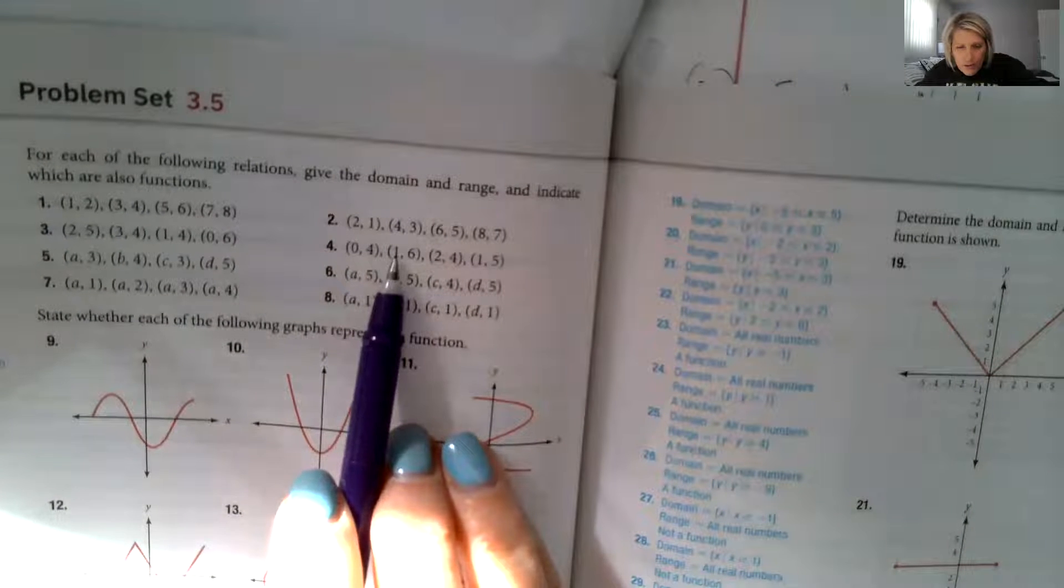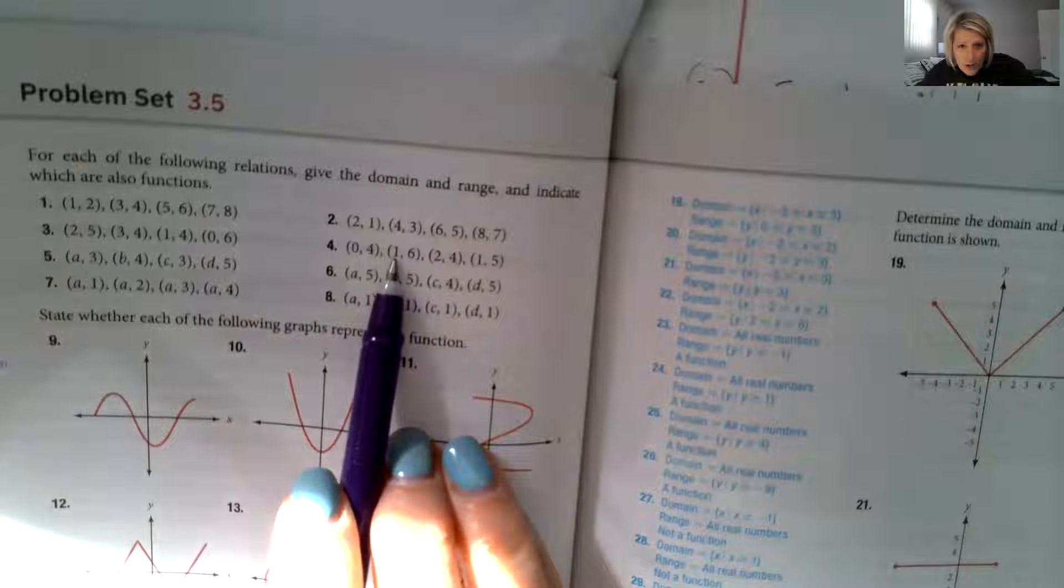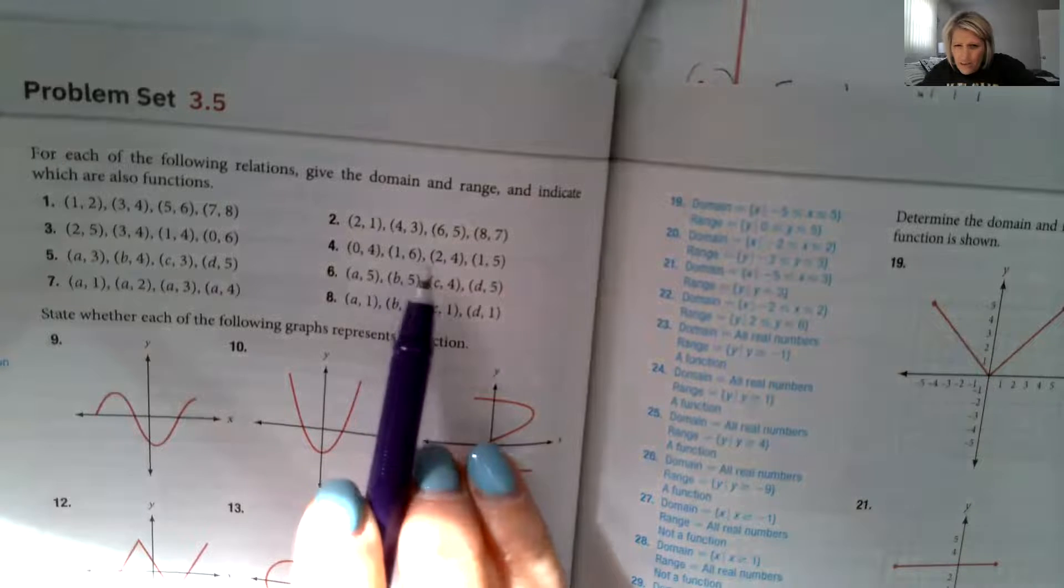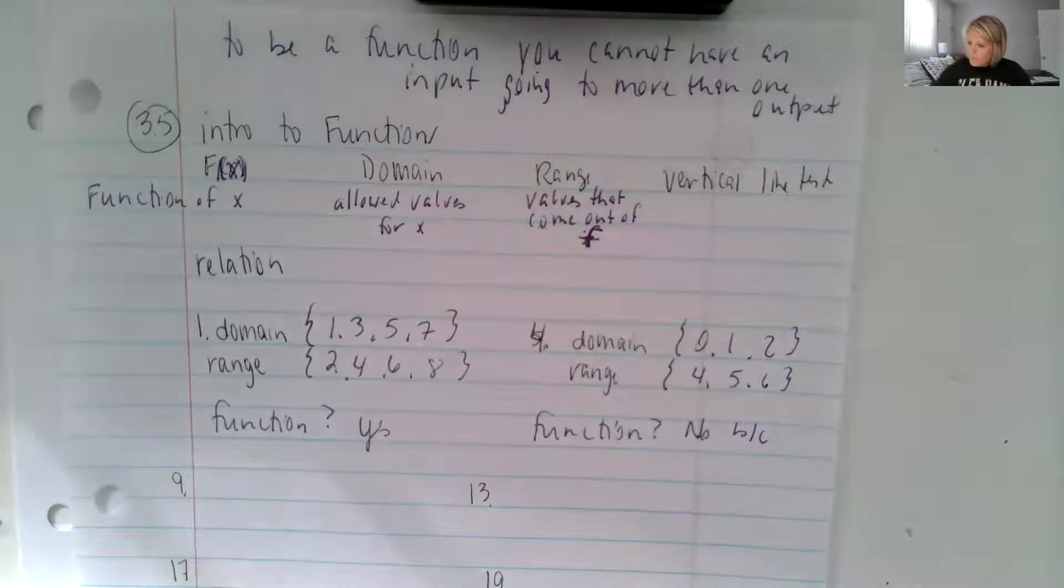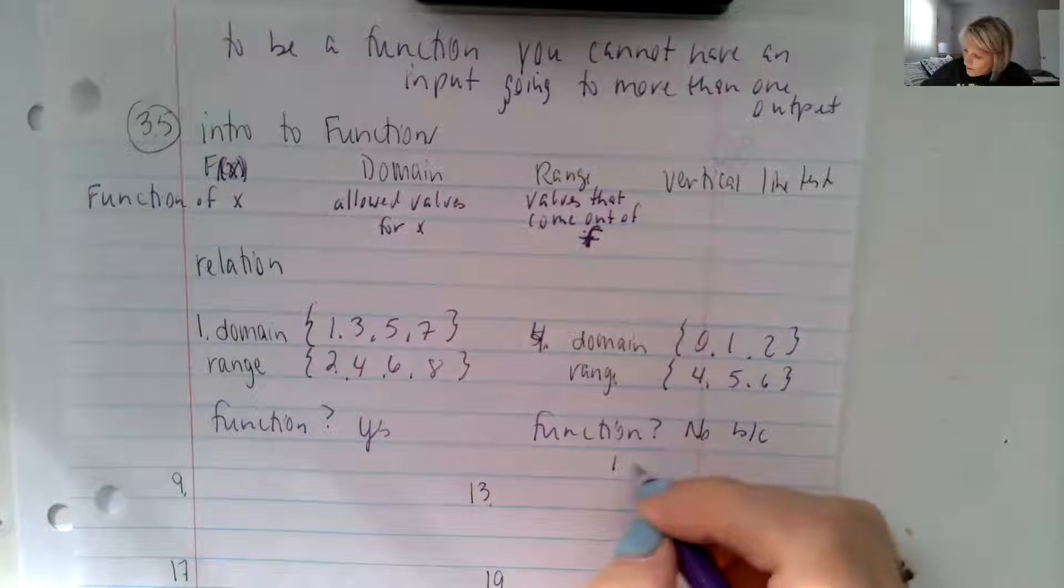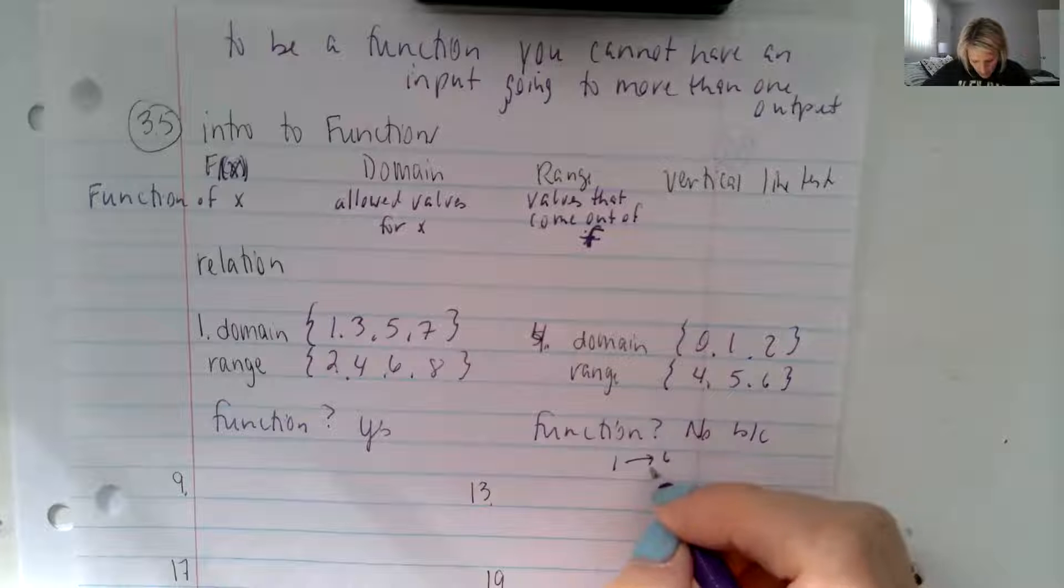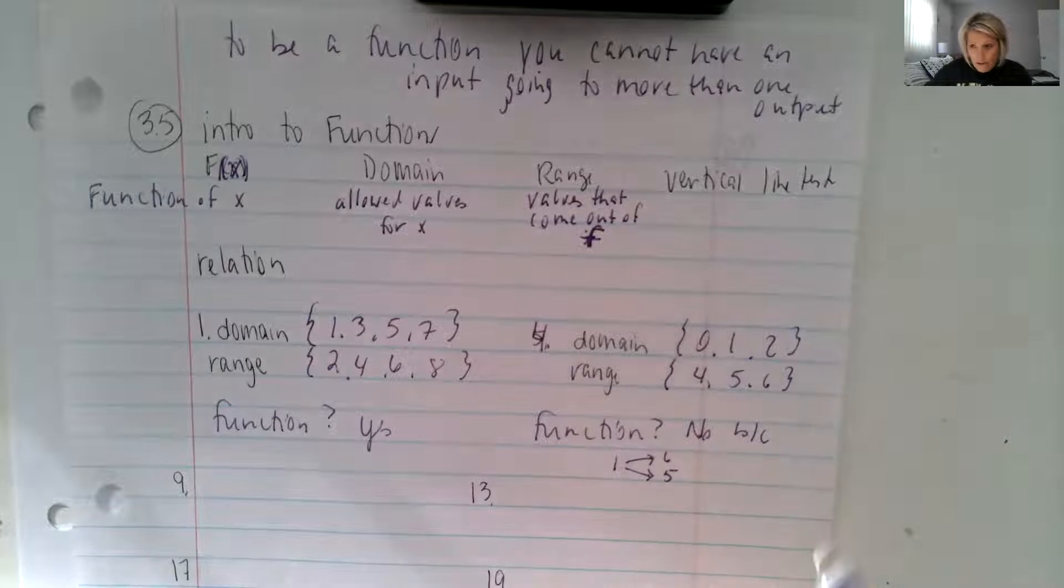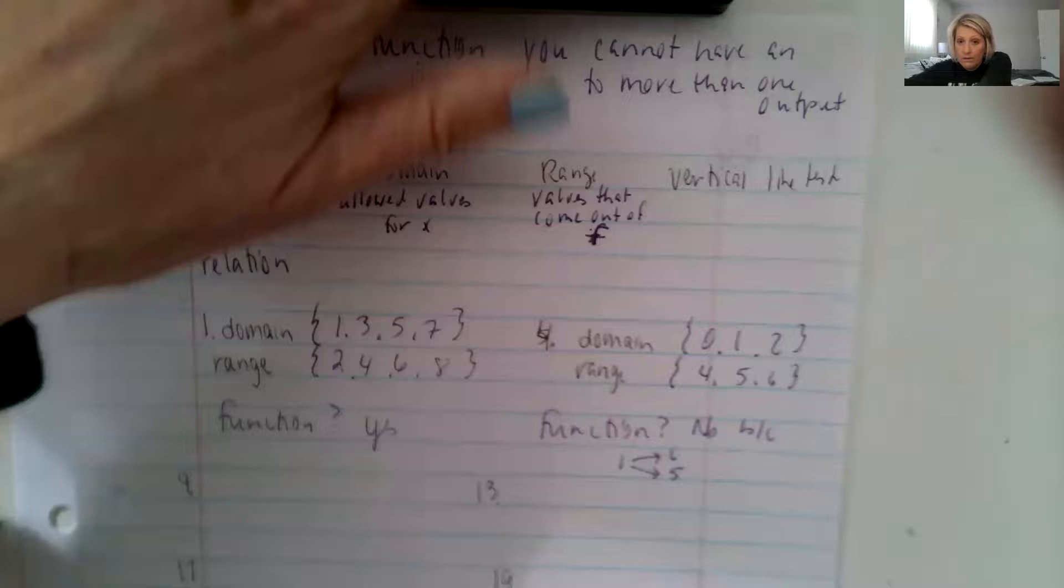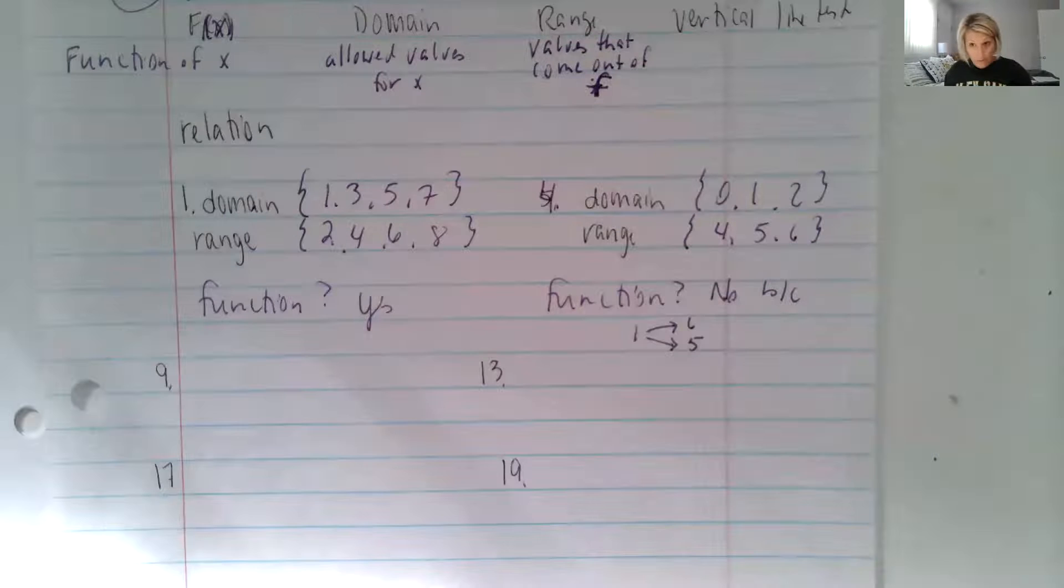And we're going to say no, because if you look at number four, one says if you put one into your machine, six comes out. But it also says if you put one into your machine, five comes out. And that cannot be true about a function. Because one goes to, one is trying to cheat with six and five, basically. It's trying to have two best friends. You can have two best friends.